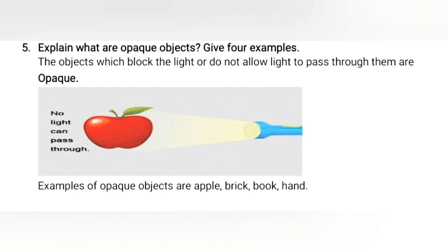Question number 5: explain what opaque objects are and give 4 examples. The objects which block light or do not allow light to pass through them are opaque. You can see here that an apple is opaque because torch light does not pass through it. Examples of opaque objects are apple, brick, book, and hand.